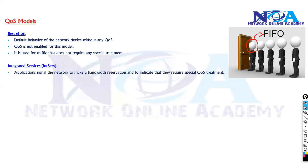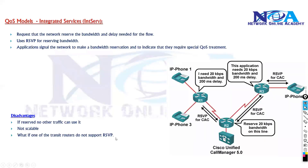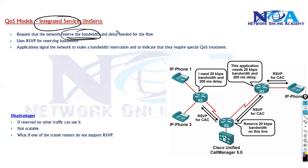We used to have something called integrated services, or IntServ. This model is not used in today's networks. It works differently — it provides guaranteed behavior for specific applications by doing a reservation of bandwidth on a particular flow. That reservation is done with the help of a protocol called RSVP, the Resource Reservation Protocol.